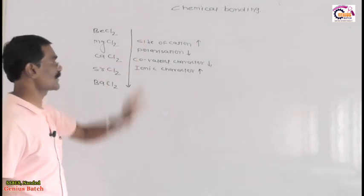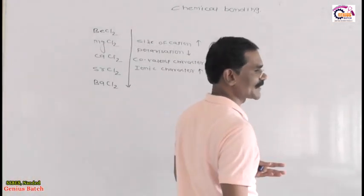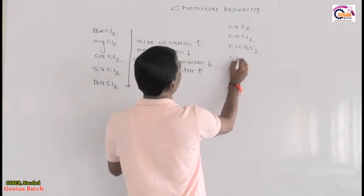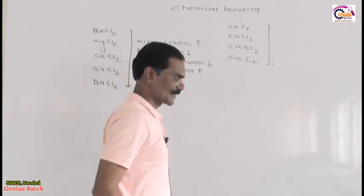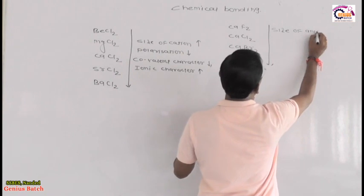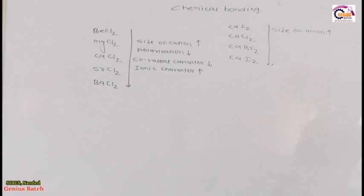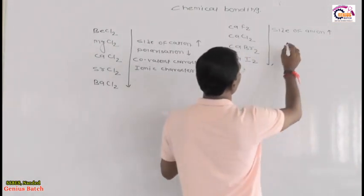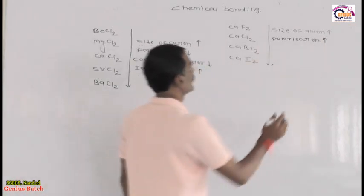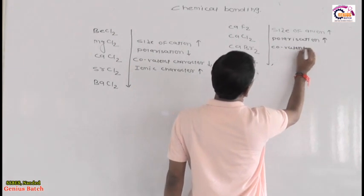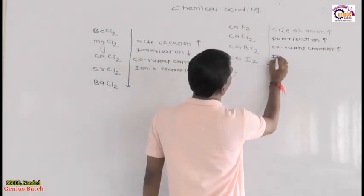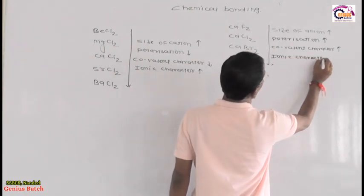The second example: consider CaF₂, CaCl₂, CaBr₂, and CaI₂. Moving top to bottom, the cation remains the same but the size of the anion increases. Therefore polarization also increases, covalent character increases, and ionic character decreases.